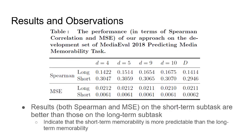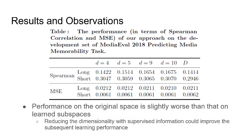Here are the results. We show the performance of our method in terms of Spearman correlation and MSE in Table 1. We firstly observe that the results, both Spearman and MSE, on the short-term subtasks are better than those on the long-term subtasks, which indicates that short-term memorability is more predictable than long-term memorability. The second observation is that performance on the original space is slightly worse than that on the learned subspace, which indicates that reducing dimensionality with supervised information in a suitable way can improve subsequent learning performance.